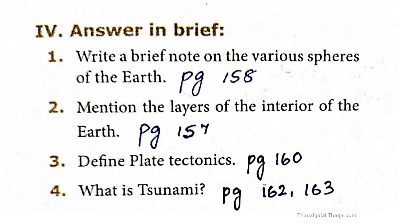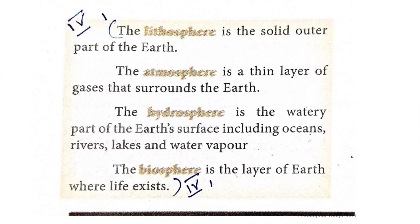Roman numeral four: Answer in brief. First question: write a brief note on the various spheres of the earth. The answer is given in page number 158. Page 158 describes the layer of the earth where life exists.